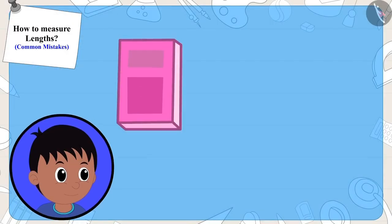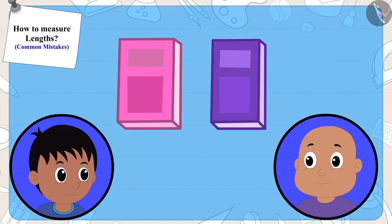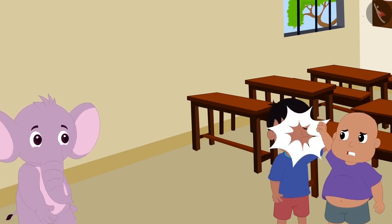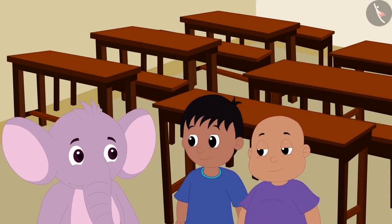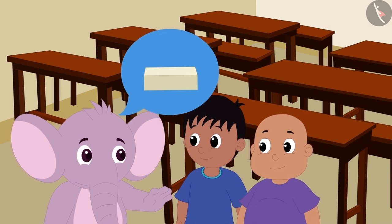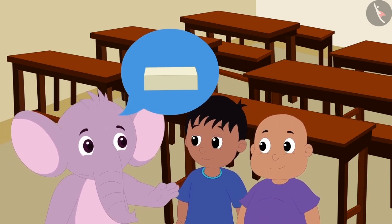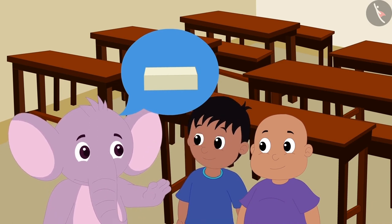Raju is saying that his notebook is longer, and Bablu is saying that his notebook is longer than Raju's. Appu saw them fighting and told them that they can use an eraser to measure the length of the notebook. This way they will know which of the two notebooks is longer.